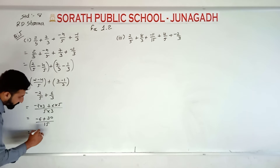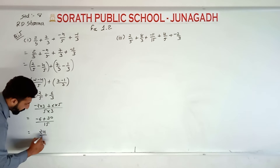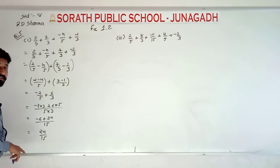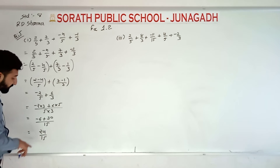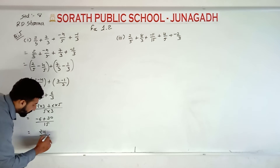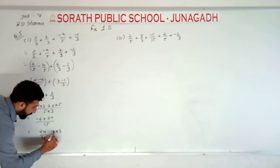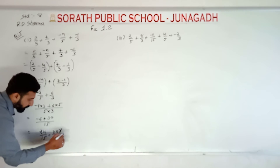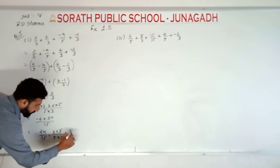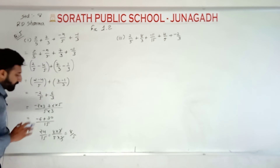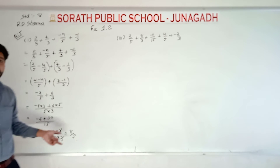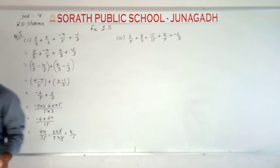30 minus 6 becomes 24 upon 15. This is not standard form because they have common factors: 8 threes are 24 and 5 threes are 15, so the 3s cancel. The final answer is 8 upon 5. We want to express rational numbers in standard form.